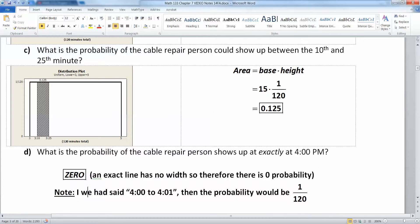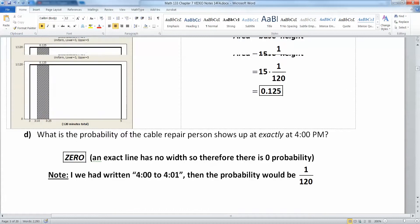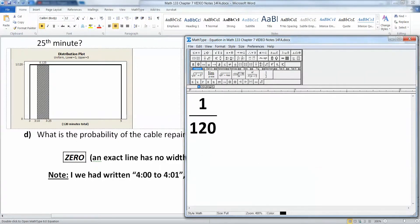It's a little bit of a trick question. Now, if I had written 4 o'clock to 4:01, then the probability would be 1 times 1 over 120, which is 1 over 120. But that's not what I said. I didn't say it shows up in the minute between 4 o'clock and 4:01. I said it shows up exactly at 4 o'clock, period, on the dot, no decimal places.